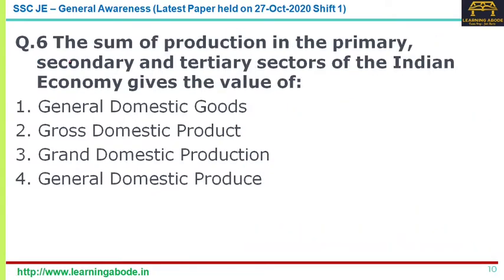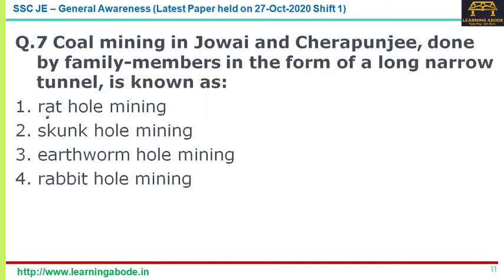Question number six: the sum of production in the primary, secondary, and tertiary sectors of the Indian economy gives the value of — options include general domestic goods, general domestic product, general domestic production, and general domestic produce. The answer is option two, Gross Domestic Product (GDP). GDP is also defined as the monetary or market value of all finished goods produced within a country for a particular time period.